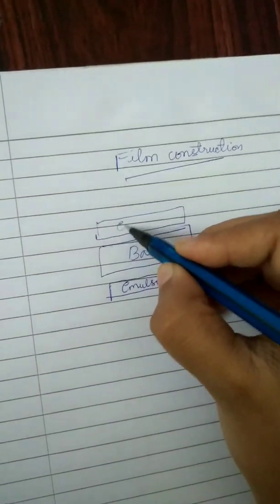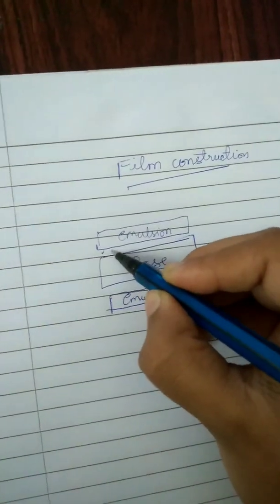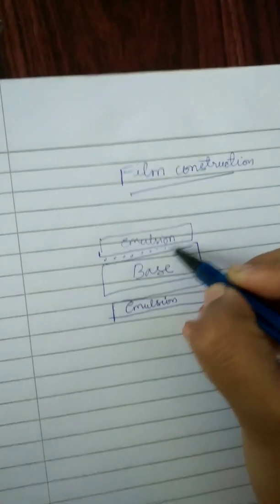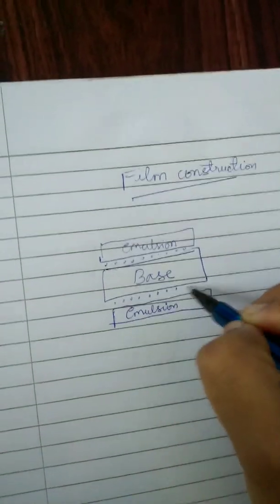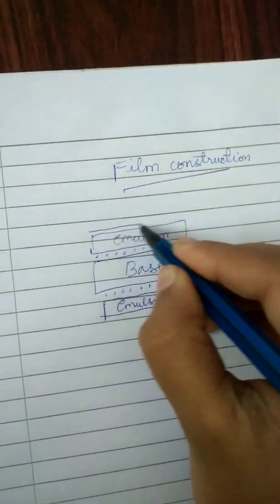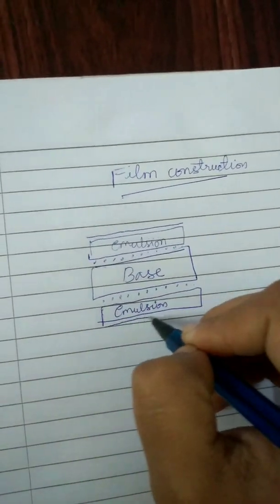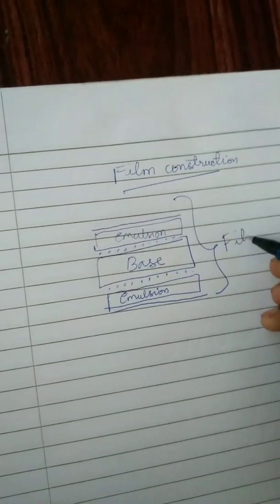And this emulsion layer is attached to the base by an adhesive layer or subbing layer and on top of emulsion layer there is supercoat. So this all together it forms film.